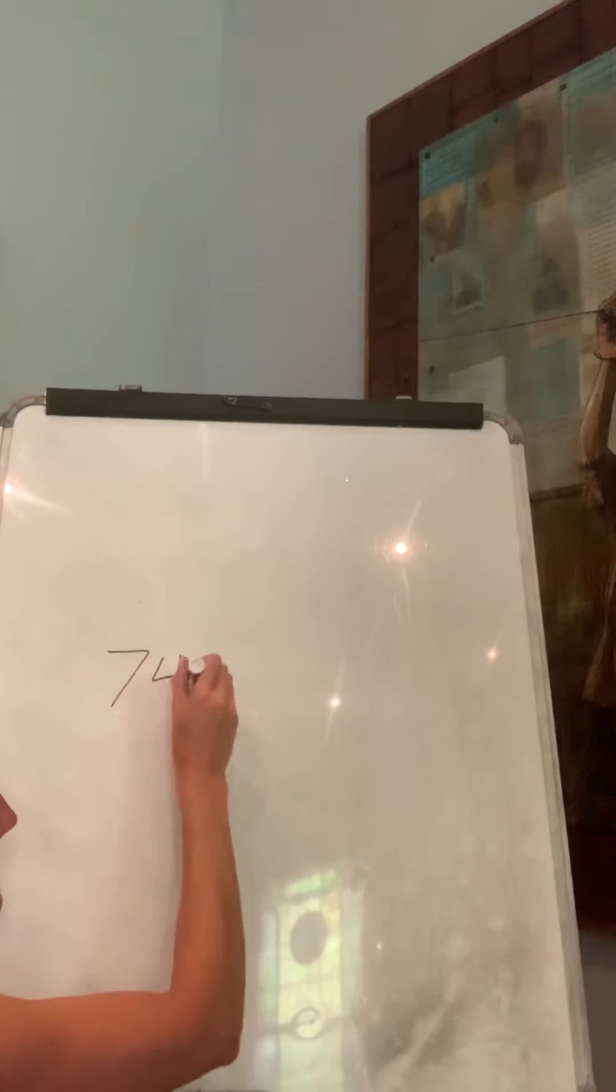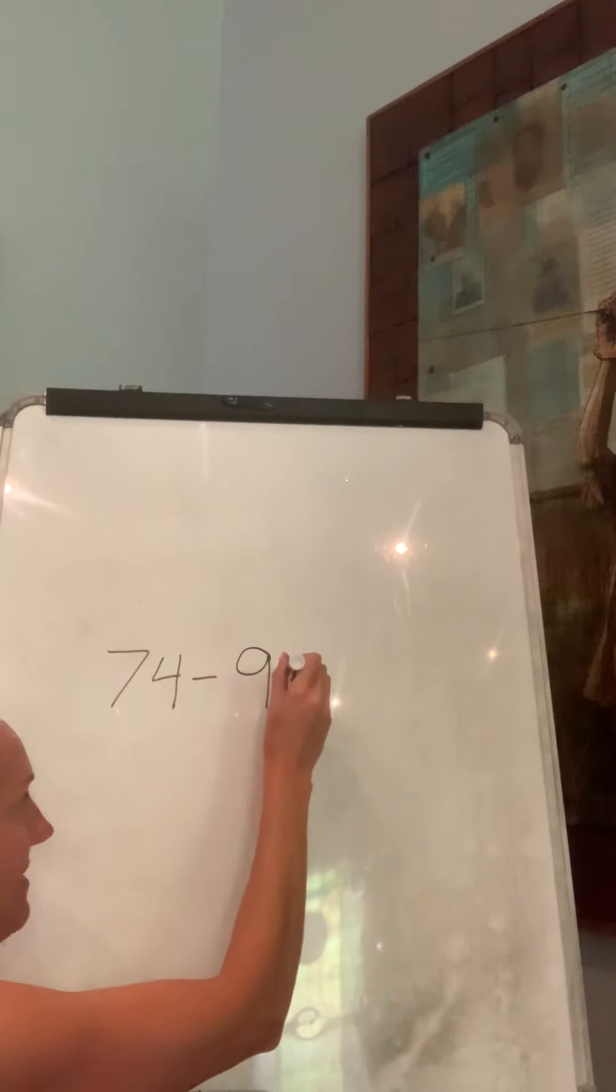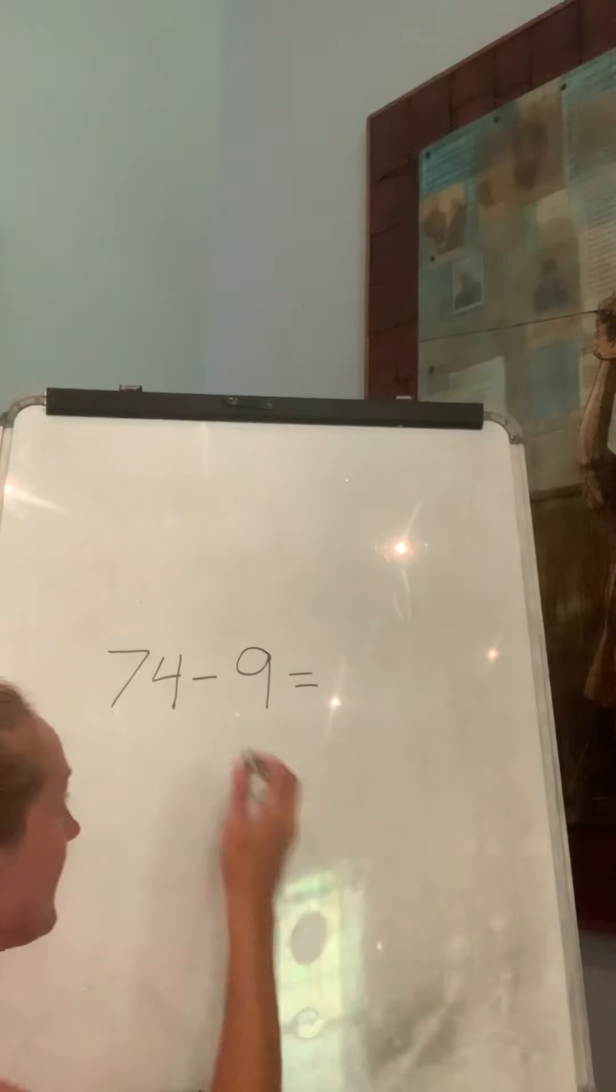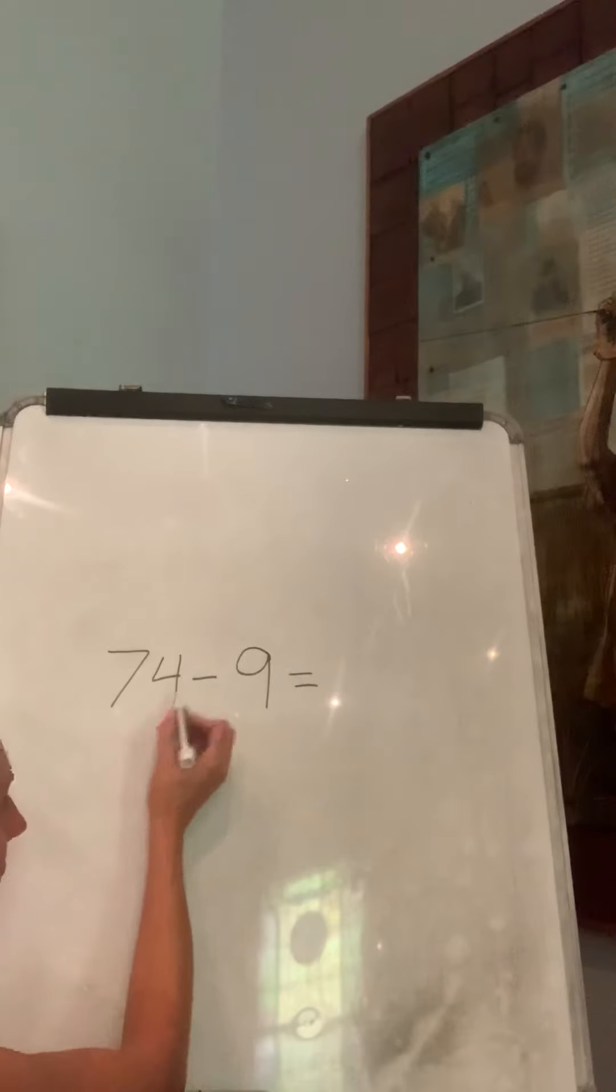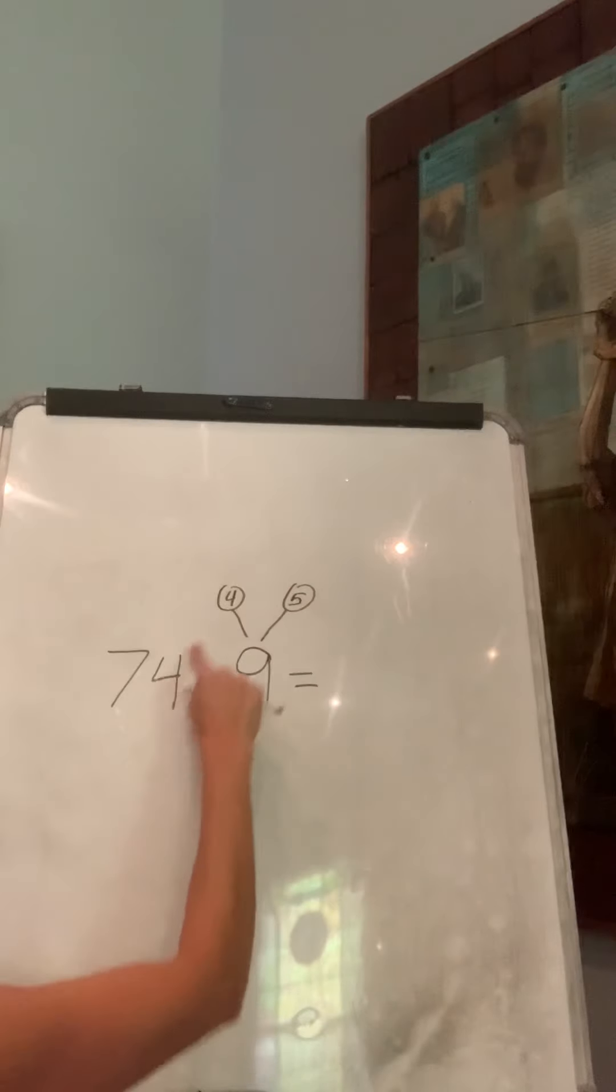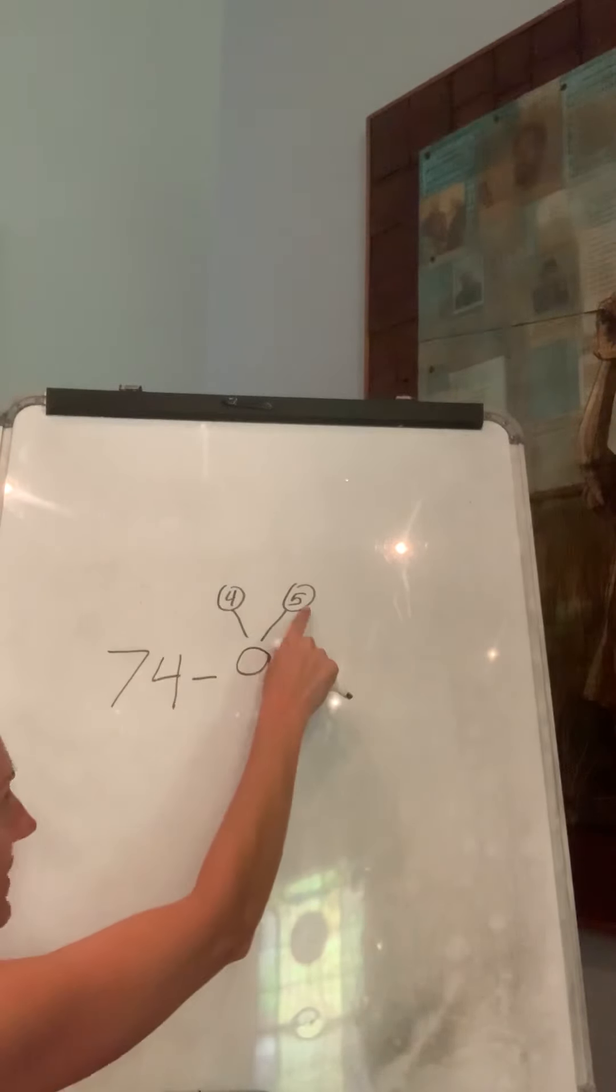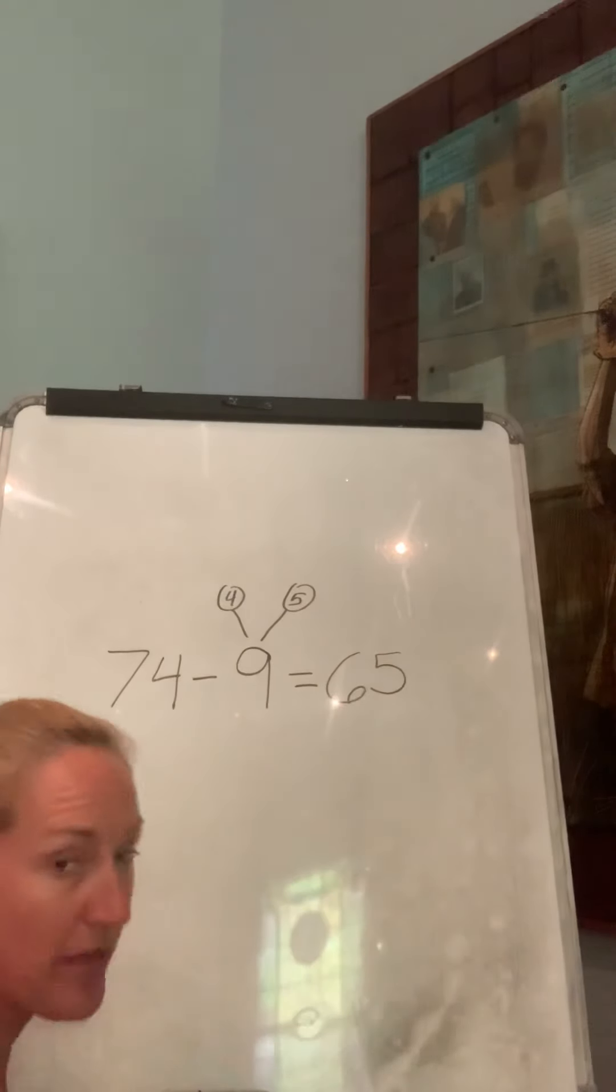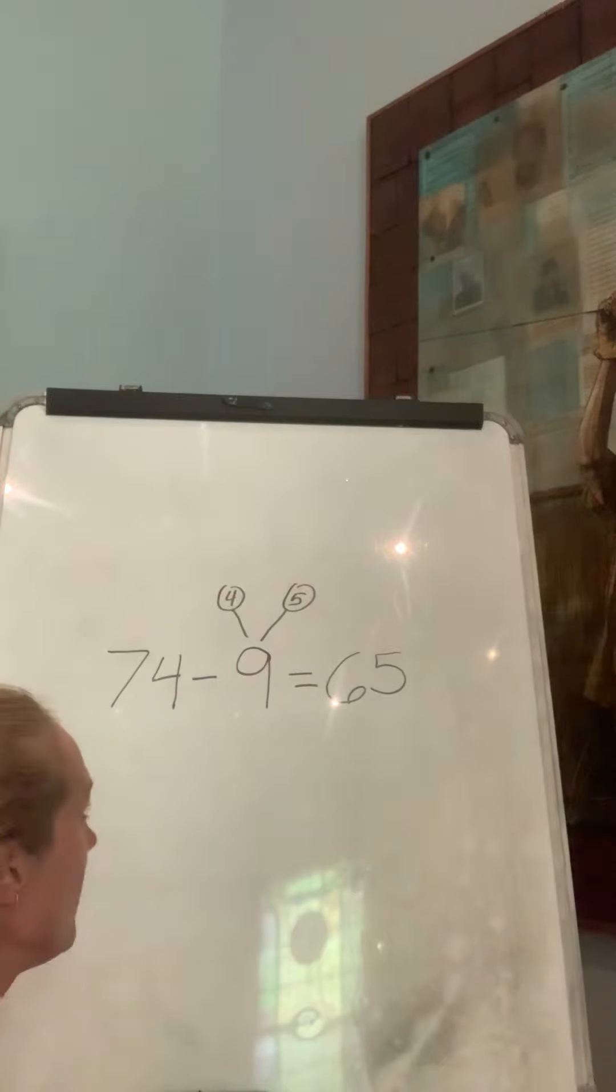Then we had 74 minus 9. Again, there are a couple ways you could do this. 74, well if I take away, I know that 9 is 4 plus 5. So if I take away this 4, I'll be down to 70. 70, if I take away a 5, I'll be at 65. So I know that was one strategy.